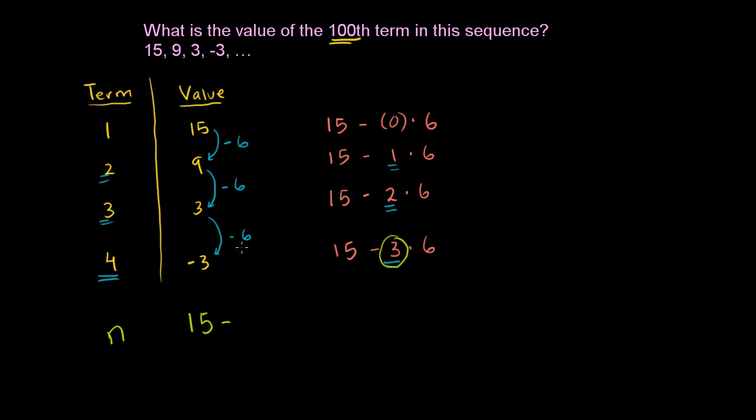When n is 4, n minus 1 is 3. When n is 3, n minus 1 is 2. When n is 2, n minus 1 is 1. When n is 1, n minus 1 is 0. So we're going to have this term right here is n minus 1. So minus n minus 1 times 6.